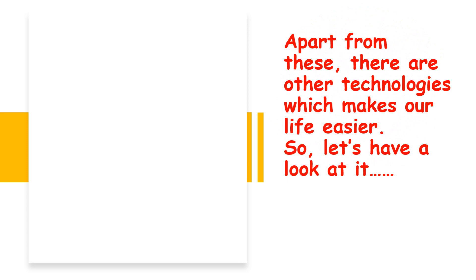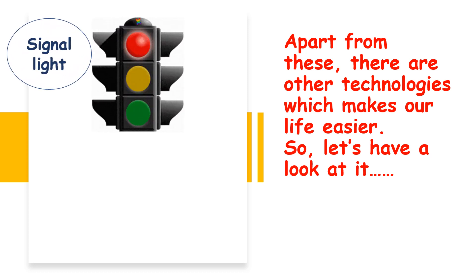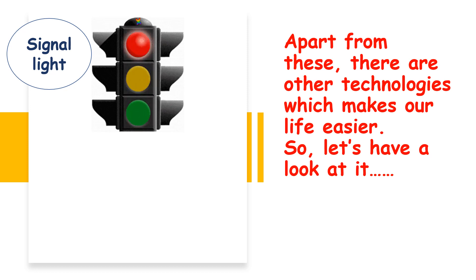Apart from this, there are other technologies which make our life easier. Look at this first picture — it is a signal light. Have you seen somebody switching it on or changing it from green to yellow, yellow to red? There is no one standing near it who changes these lights. The signal lights are already programmed in the computer which controls them.